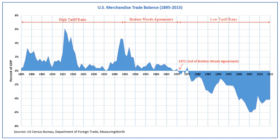Imbalances in international trade were theoretically rectified automatically by the gold standard. A country with a deficit would have depleted gold reserves and would thus have to reduce its money supply. The resulting fall in demand would reduce imports and the lowering of prices would boost exports, thus the deficit would be rectified. Any country experiencing inflation would lose gold and therefore would have a decrease in the amount of money available to spend, which would act to reduce the inflationary pressure. Supplementing the use of gold in this period was the British pound. Based on the dominant British economy, the pound became a reserve, transaction, and intervention currency. But the pound was not up to the challenge of serving as the primary world currency, given the weakness of the British economy after the Second World War.